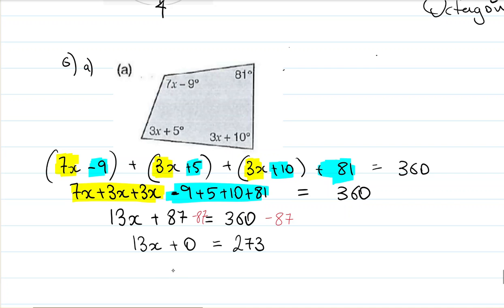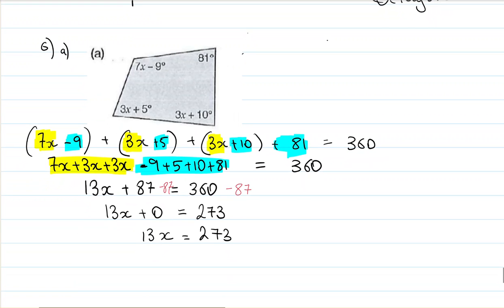Now 13x plus 0 is just 13x equals 273. Now if I want to get rid of the 13 on that side, all I've got to do is divide by 13 on both sides of the equation, because 13 divided by 13 is 1. 100 divided by 100 is 1, a million divided by a million is 1. So I will have x left by itself there, equals 273 divided by 13 is 21. So my answer is 21 degrees, and I have found the variable that it was asking for.